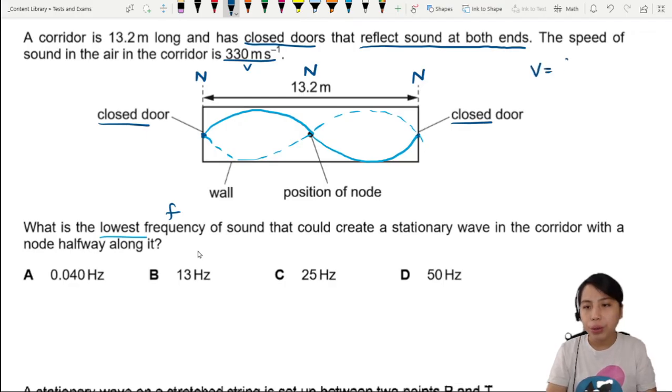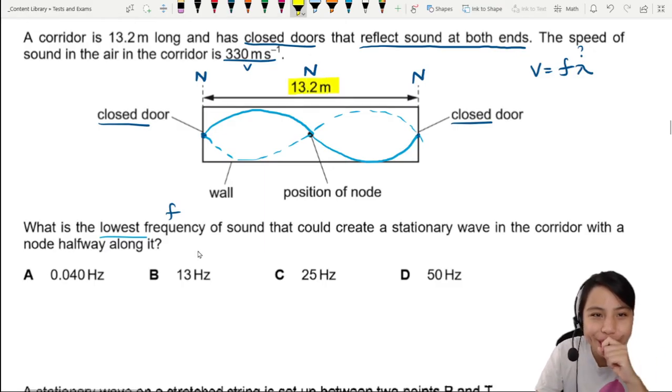V equals F lambda. We need to know the lambda. The hint is right here in the 13.2.